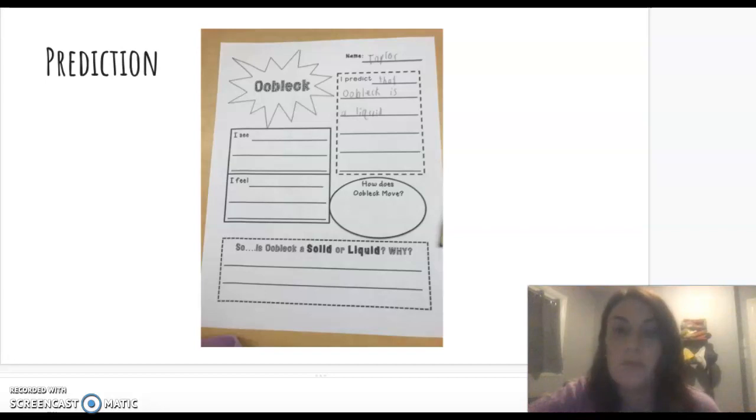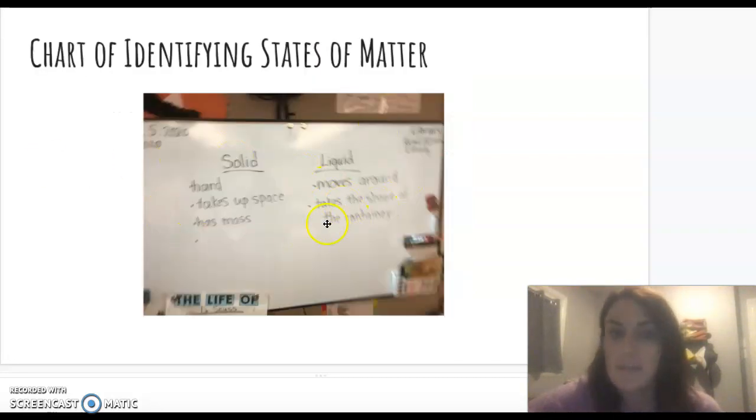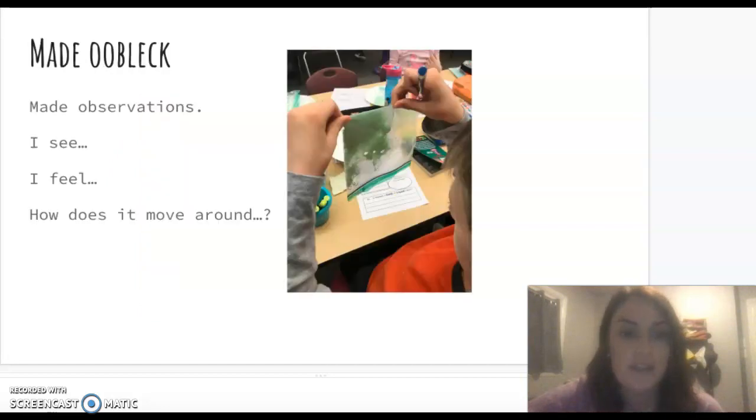And then we actually made the Oobleck and put it in Ziploc baggies. Then they made observations. They had to write down what they saw, referring back to that chart of the different states of matter. They wrote what they felt: What does it feel like? Is it hard? Does it take up space? How does it move around? Does it move quickly like a river or slowly?